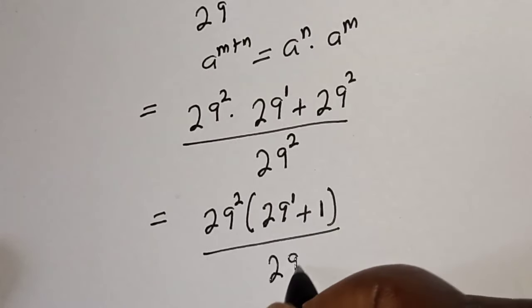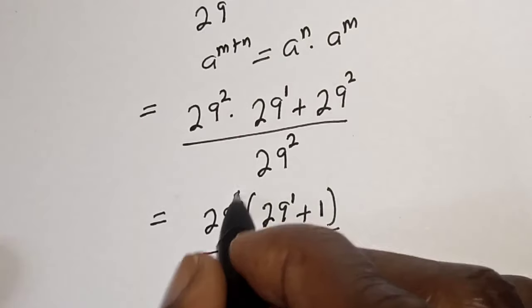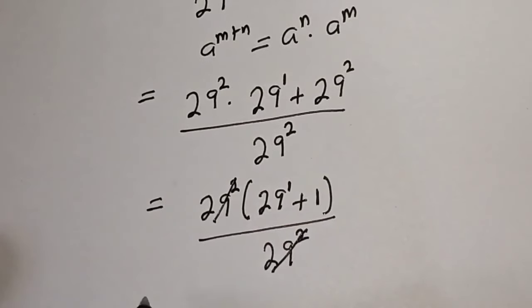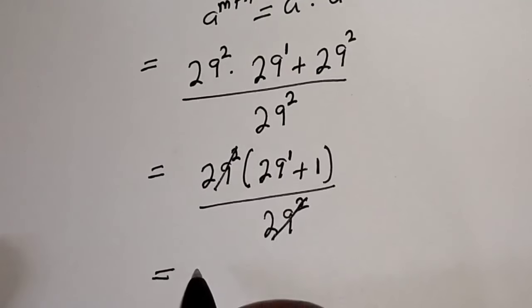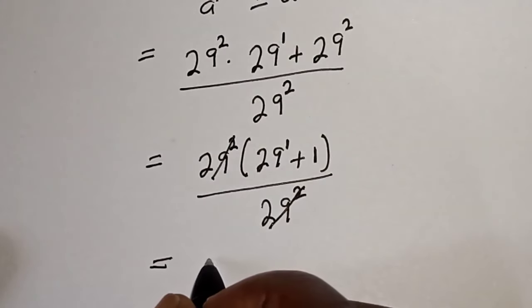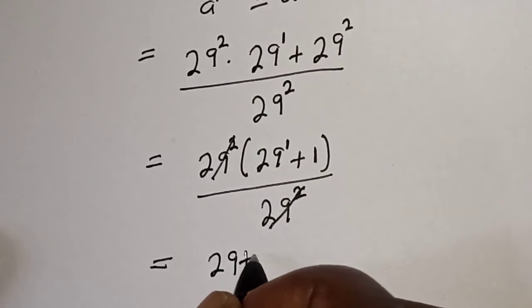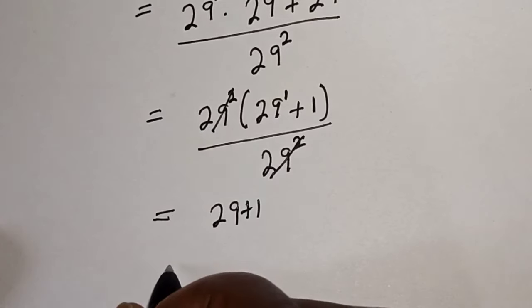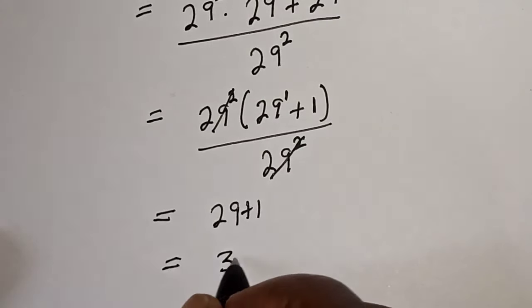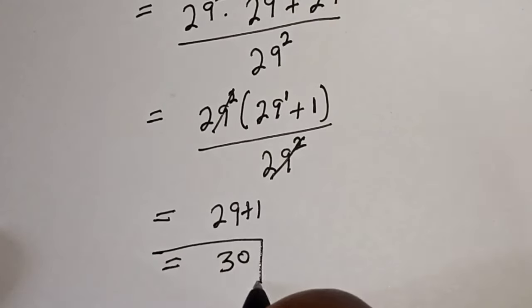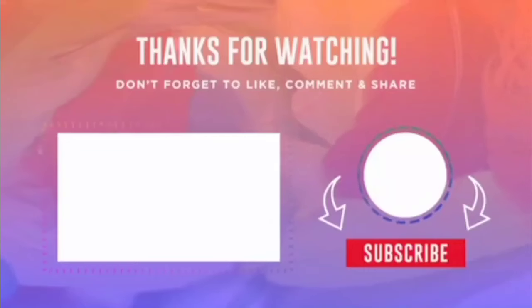over 29 squared. This will cancel out. Then this equals 29 raised to power 1, which is 29, plus 1. And 29 plus 1 equals 30. That is our final answer. If you enjoyed the class, please don't forget to like, share, comment and subscribe. Thank you.